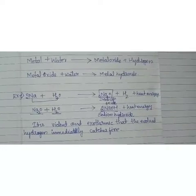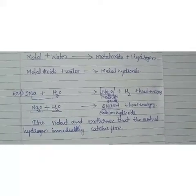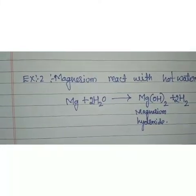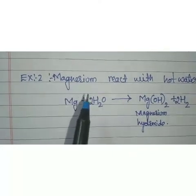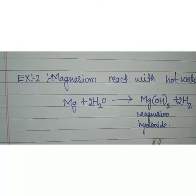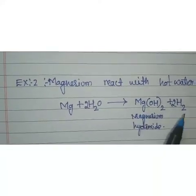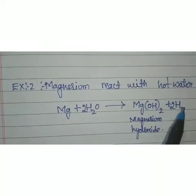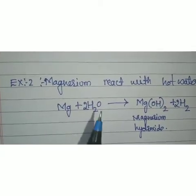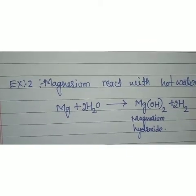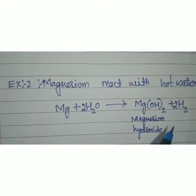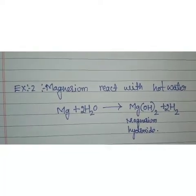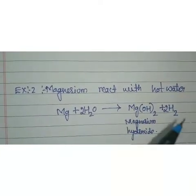Sodium, potassium, and lithium react with cold water only. Now let us see how some metals react with hot water. Magnesium does not react with cold water but it reacts with hot water to form magnesium hydroxide and produces hydrogen gas. Magnesium starts to float because the bubbles of hydrogen gas stick to its surface. So magnesium does not react with cold water but reacts with hot water to produce magnesium hydroxide and hydrogen gas.